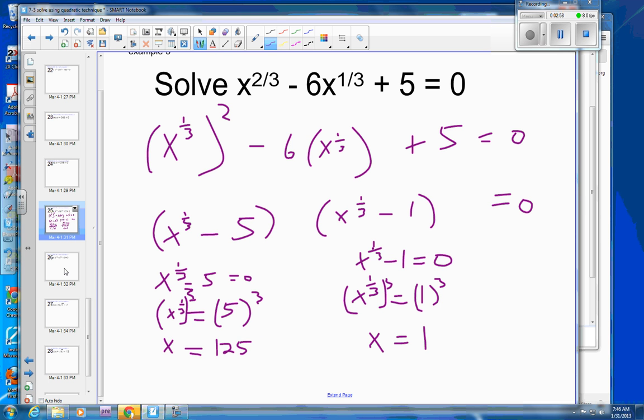And then you could try 1. One's the other one. So 1 to any power is 1. Minus 6 would be negative 5. And then plus 5 would be back to 0. So that one works also.